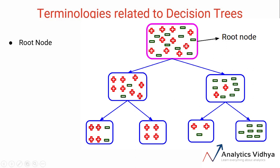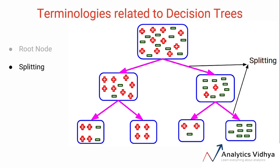The second terminology is splitting. Splitting is a process of dividing a node into two or more sub-nodes. The highlighted lines here represent the splitting as a node is being split into sub-nodes.